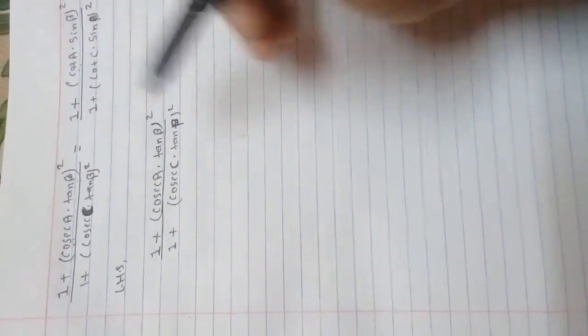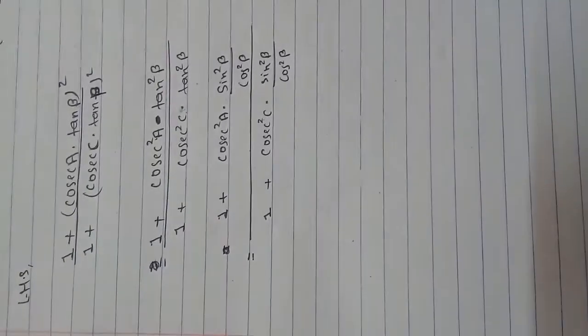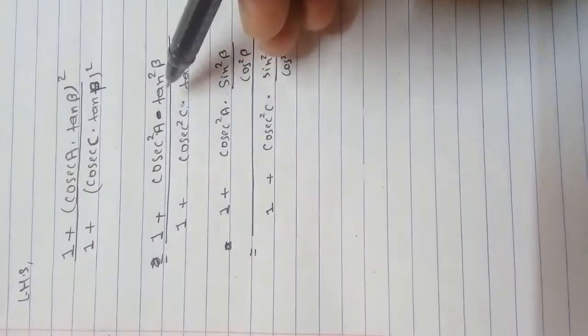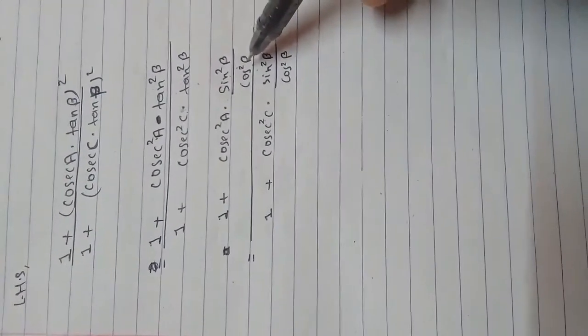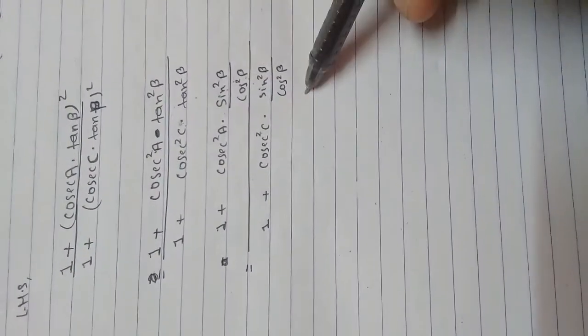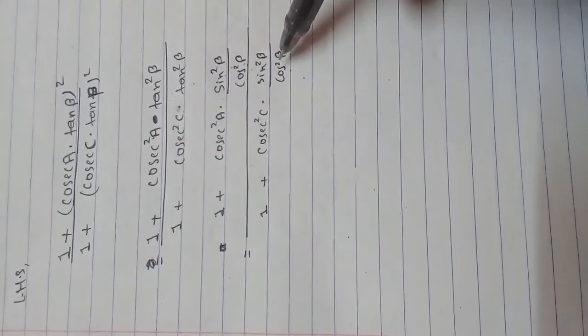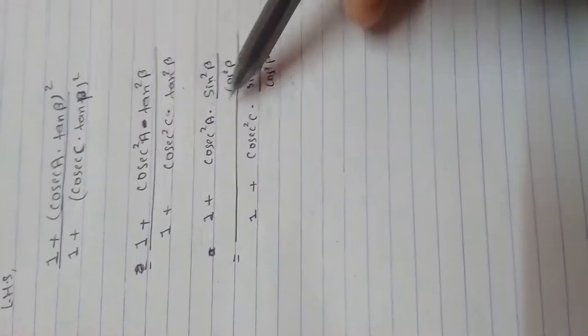After identifying these key conversions, let's start from the LHS. Sharing the power, I converted tan² β into sin² β divided by cos² β. However, this cos² β is not needed in our RHS, so we need to cancel it out.